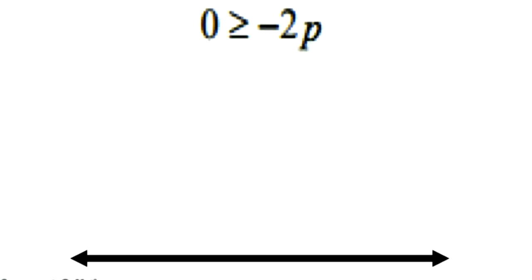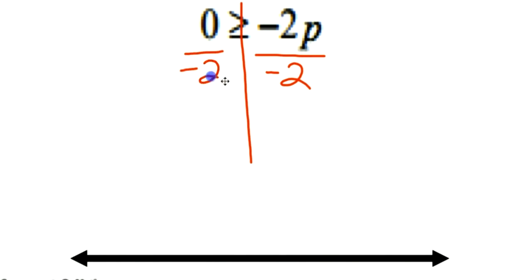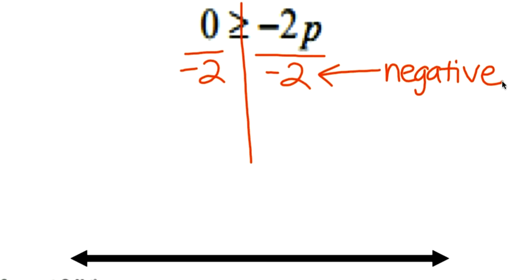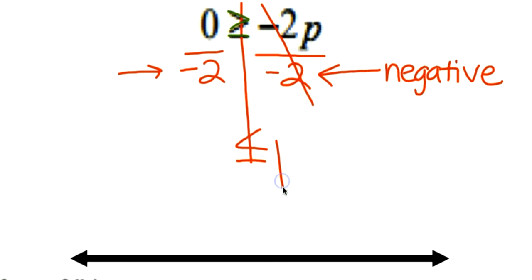The next example: 0 is greater than or equal to negative 2p. Drawing my line — multiplication is happening, so I divide by negative 2 on both sides. Since I'm dividing by a negative, I flip the inequality symbol: it was greater than or equal to, but now it becomes less than or equal to. The negative 2s cancel, leaving p, and 0 divided by negative 2 is 0.